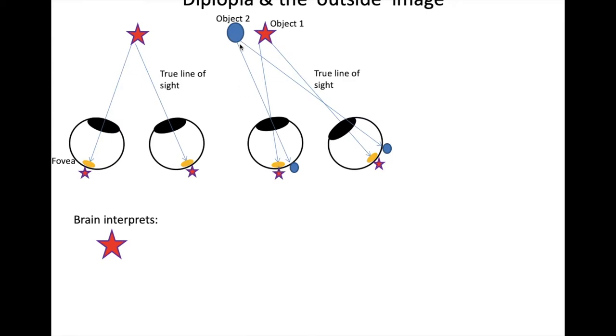The light from the blue circle, which is lateral to the red star, the object of fixation, is hitting the side of the fovea in both eyes. Like so. The brain, again correctly, interprets this, the red star in the middle, the fixation point, and a blue circle lateral to the red star.